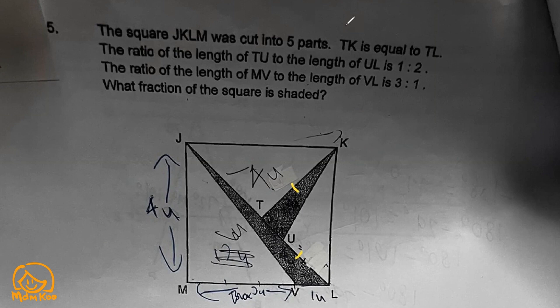We also know that TU to UL is 1 to 2, so this one will make three parts. The ratio of the length of MV to the length of VL is 3 to 1. For this one, 1u to 2u, then this one will be 3 to 1, so I have three parts to one part.